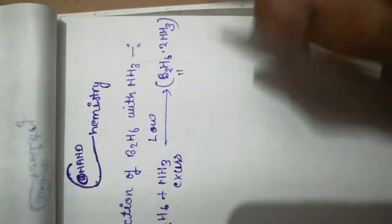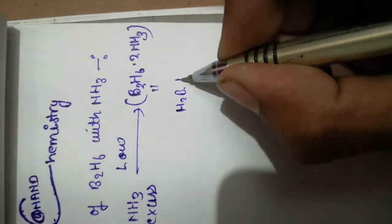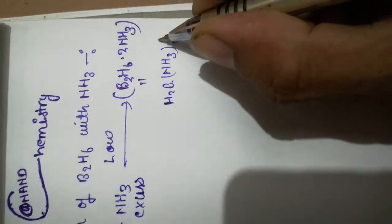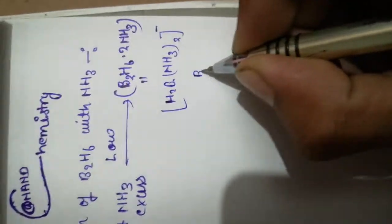The product can also be written in ionic form: [H2B(NH3)2]+ and [BH4]-.